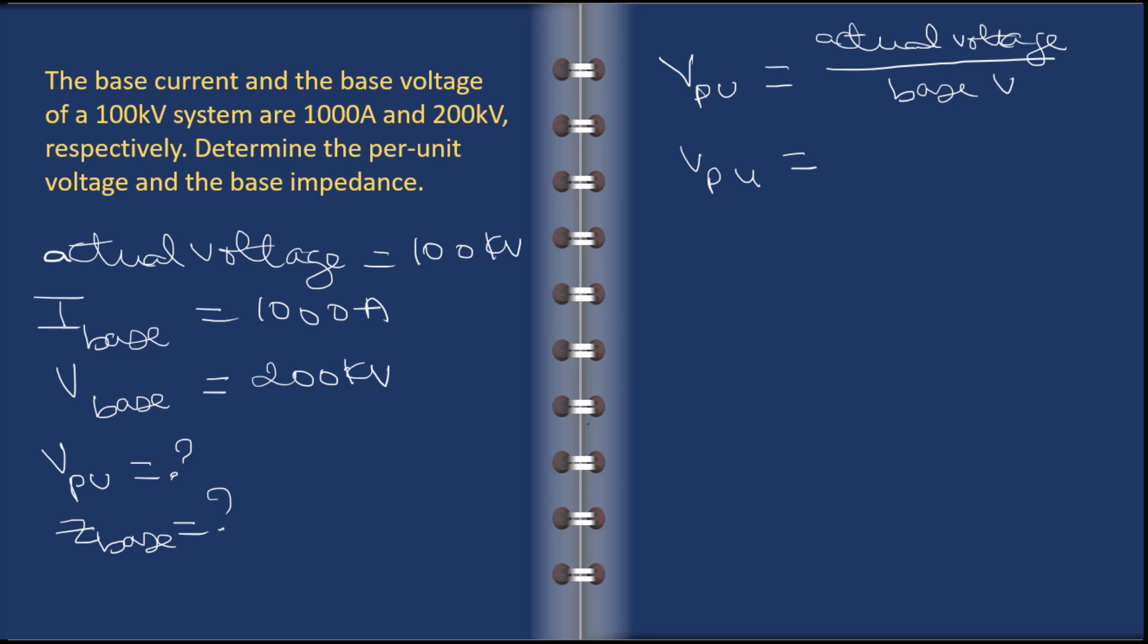Because you already had listed it earlier, that's why it's always important to first start with listing the parameters that you're given. So V per unit actual voltage is 100 kV.